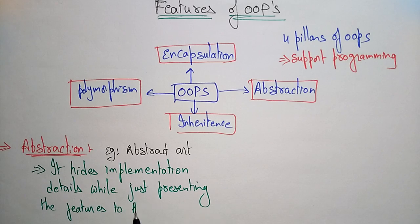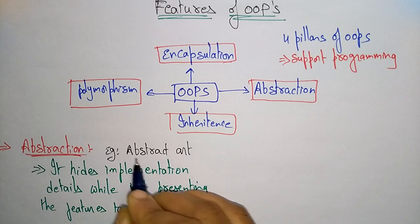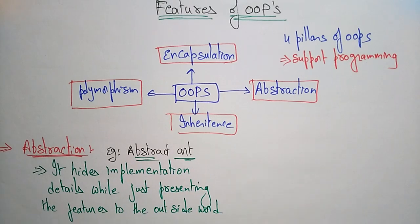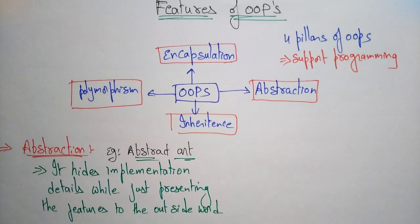Abstraction hides the implementation details while just presenting the features to the outside world. If you see abstract art, you feel the painting is beautiful — that is what is shown to the outside world. But the implementation details — what colors they mixed, how many colors were combined — are hidden. Only the features are exposed to the outside world.